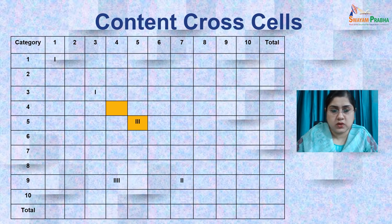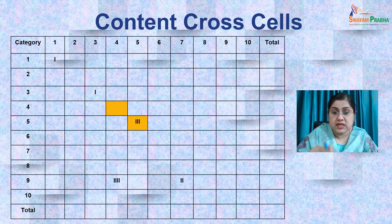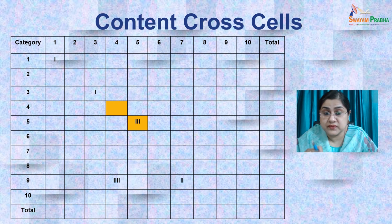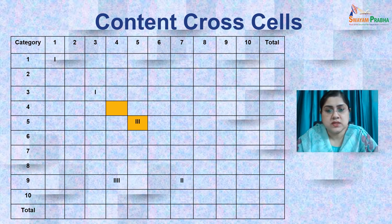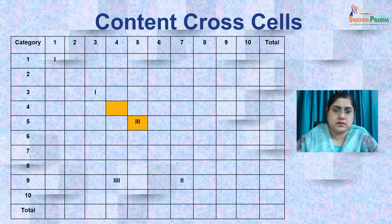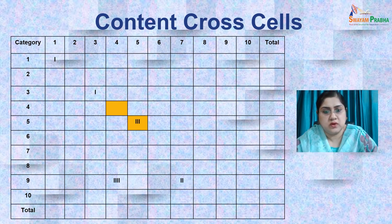Next are the content cross cells. These correspond to row 4 and column 4, and row 5 and column 5 in the matrix. These are known as content cross cells, and if they are overloaded, it reflects that the teacher makes a lot of emphasis on subject matter — staying more than 3 seconds on those particular points, indicating the subject matter was much more emphasized by the teacher.